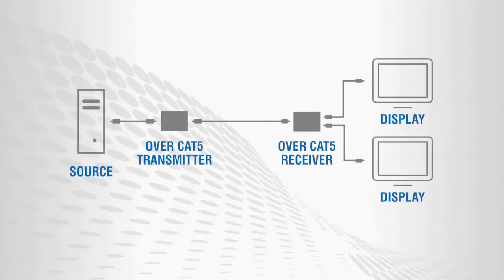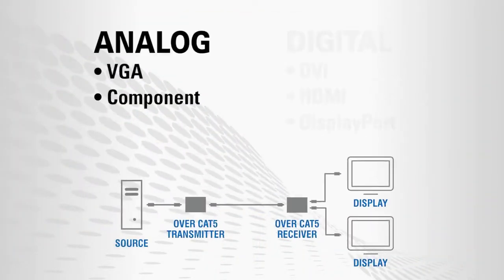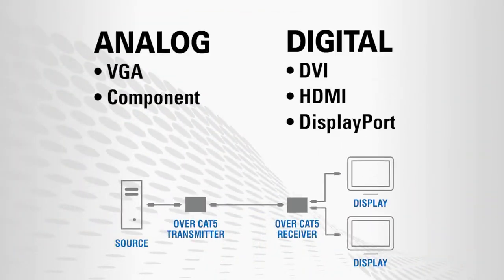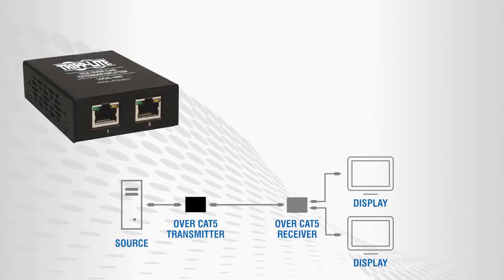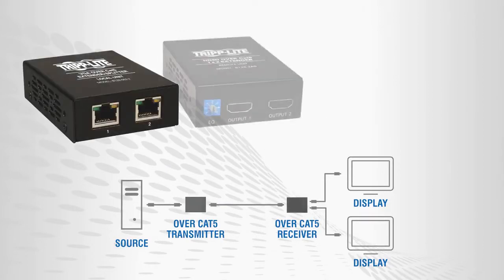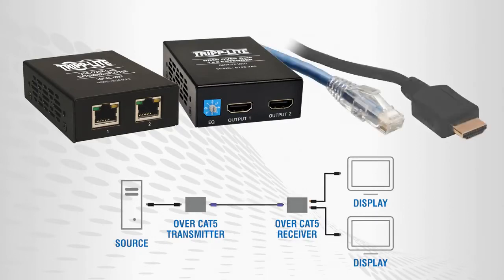TripLite's OverCat 5, Cat 6 solutions are available for both analog and digital installations. For a basic installation, you'll need a transmitter, receiver, Cat 5, Cat 5e or Cat 6 cable, and Direct Connect AV cables.